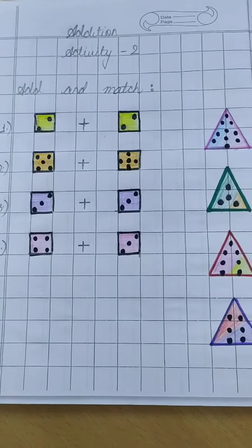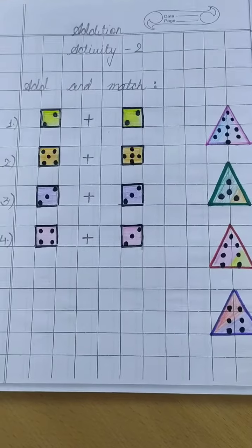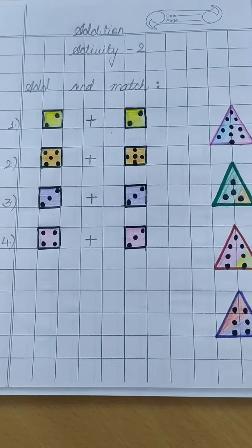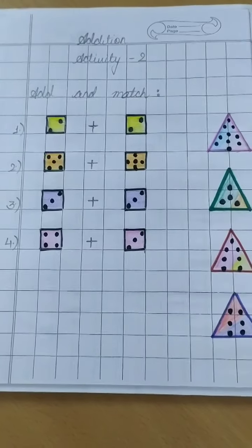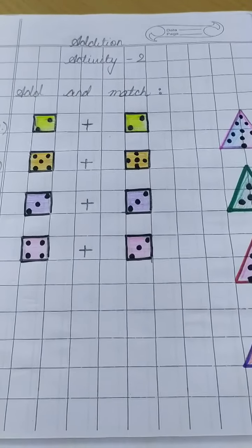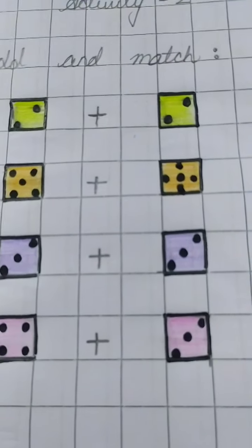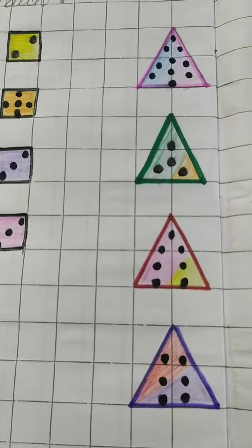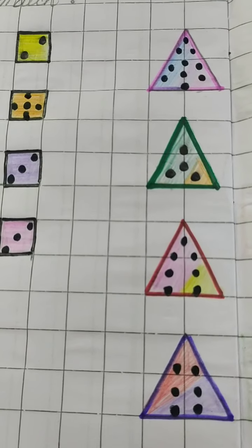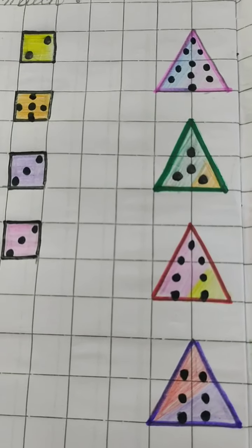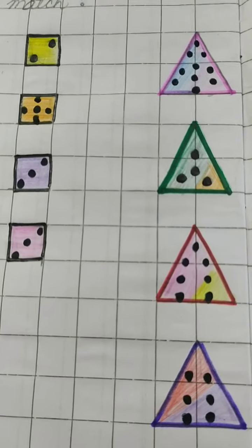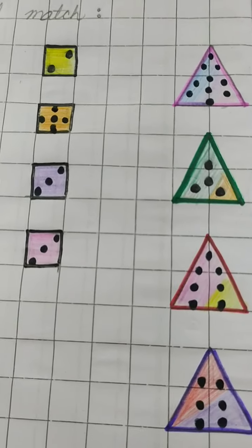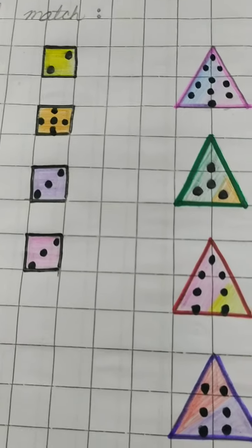Aaj hum phir say activity kareenge on addition and this is activity number 2. In this activity you have to add and match. Let me explain you. Aap kya kareenge? Ye joh blocks hain, inki dots ko add kareenge. Aur next column mein joh aapko diyen huay kuch triangles unke saamne, us mein jis triangle ke andar in dots ke sum ke equivalent dots hoongi, usso isko match kareenge. Here we go.